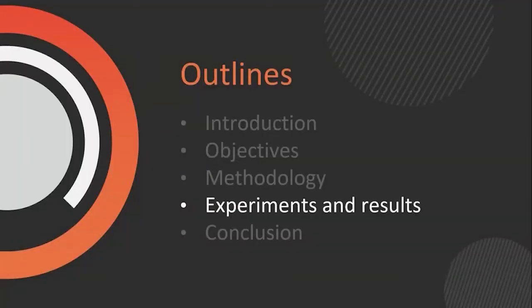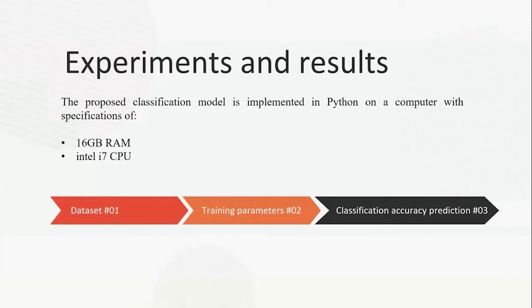Experiments and Results. The proposed classification model is implemented in Python on a computer with 16 GB RAM and an Intel i7 CPU, 10th generation. The dataset used is APTOS from Kaggle. The pipeline goes from dataset to training parameters, then classification and accuracy prediction.